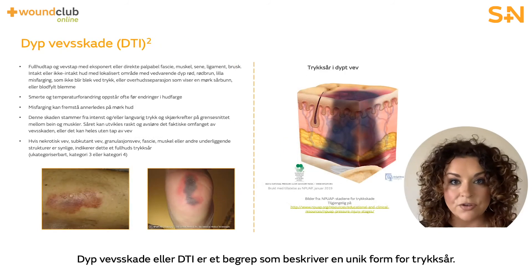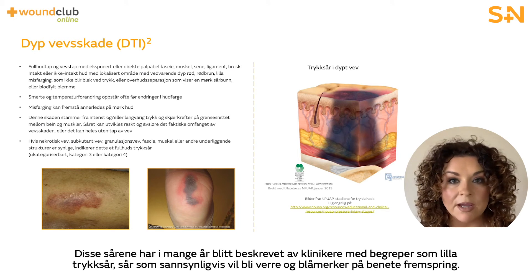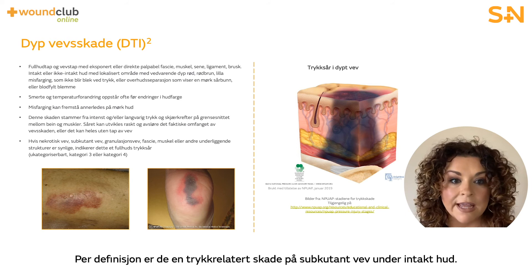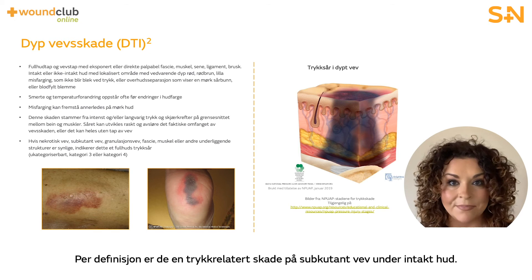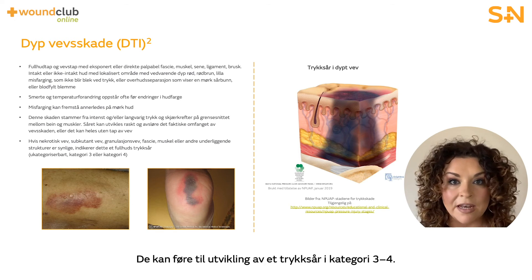Deep tissue injury, or DTI, is a term used to describe a unique form of pressure ulcer. These ulcers have been described by clinicians for many years with terms such as purple pressure ulcers, ulcers likely to deteriorate, and bruises on bony prominences. By definition, they are a pressure-related injury to subcutaneous tissues under intact skin. Initially these injuries have the appearance of a deep bruise, and they may lead to the development of a category 3 or 4 pressure ulcer.